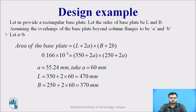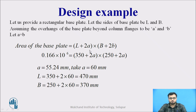We provide a rectangular base plate of size L × B and assume 'a' equal to 'b' as the overhang. We have got the area of the base plate; then L equals 350 (depth of column) plus 2a, and B equals 250 plus 2a, with a = b. Solving gives a = 55.24 mm, which we round off to 60 mm, giving length = 470 mm and width = 370 mm.